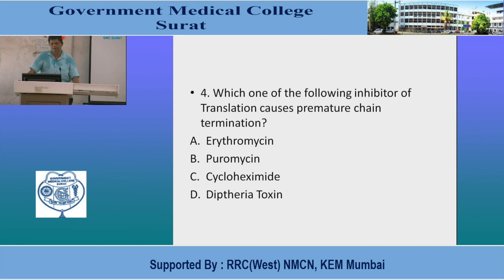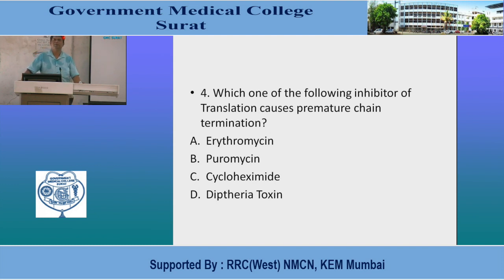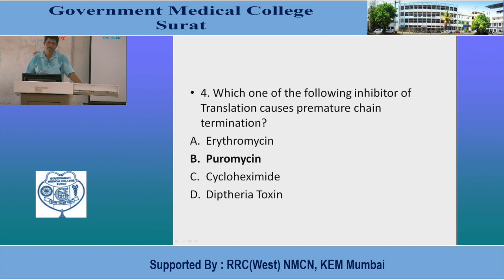MCQ: Which of the following inhibitors of translation causes premature chain termination? Erythromycin, cycloheximide, diphtheria toxin, or puromycin? Diphtheria toxin inhibits the EF2 component. Erythromycin and cycloheximide inhibit the 50S component. Aminoglycosides like streptomycin and tetracycline inhibit the 30S component. Chloramphenicol, erythromycin, linezolid inhibit the 50S. But puromycin causes premature chain termination. So the answer is puromycin.